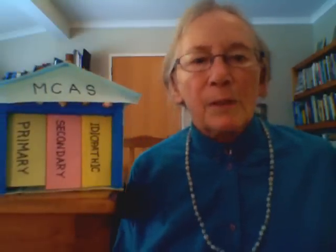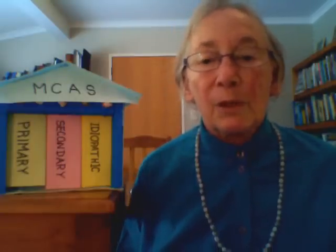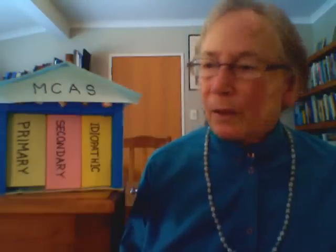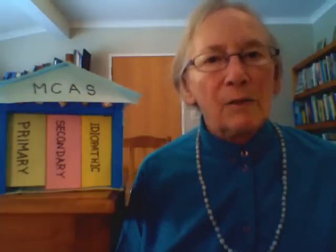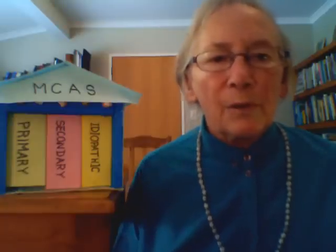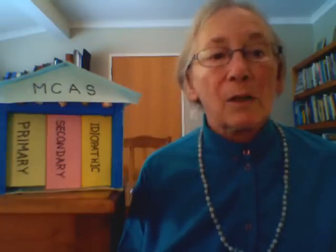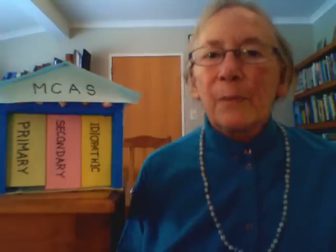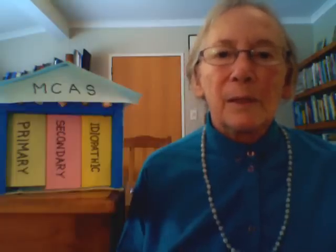One room is called primary mast cell activation, which includes mastocytosis, in which the mast cells are self-activating. Another room is called secondary mast cell activation, which includes things like allergy, chronic autoimmune urticaria, and others in which factors outside of mast cells cause them to be activated. The third room is called idiopathic mast cell activation — for people in this room, we don't yet know what is causing their mast cells to be activated.